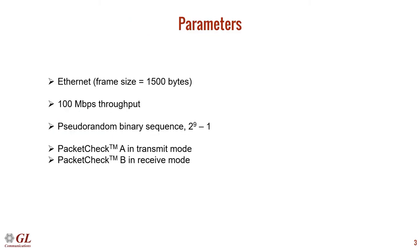PacketCheckA will insert a timestamp into the packet payload and then transmit to PacketCheckB. PacketCheckB will receive the packet and calculate the one-way delay. The parameters for this test are as follows: we will send Ethernet frames, conduct the test at 100 megabits per second, and use a pseudo-random binary sequence as our bit pattern for the bit error rate test. PacketCheckA will be in transmit mode and PacketCheckB will be in receive mode.